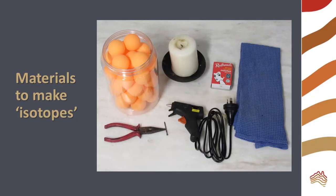To make your isotopes, you will need table tennis balls, a candle, matches, a tea towel to stop the balls rolling around, a glue gun, a steel nail, and pliers.